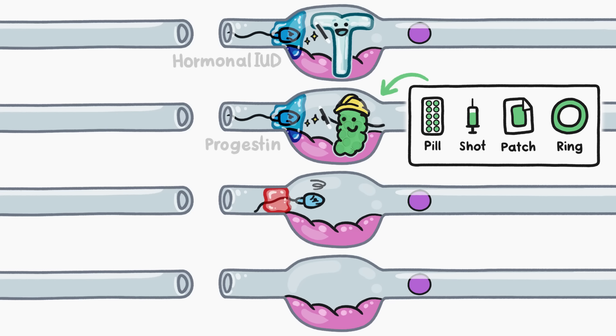Other birth control methods go one step farther and actually try to destroy the sperm before they fertilize the egg. Spermicidal jelly contains chemicals that both slow sperm down and break apart their cell walls. Though on its own, this goo isn't super effective at preventing pregnancy.